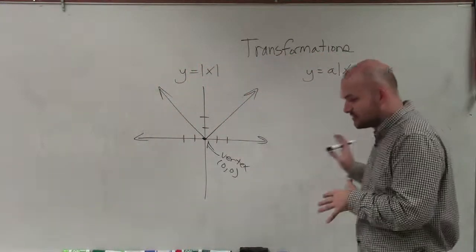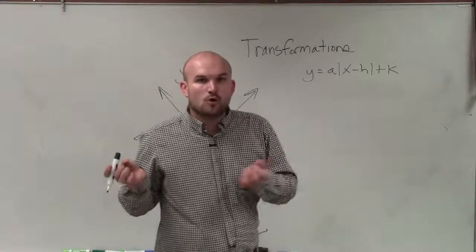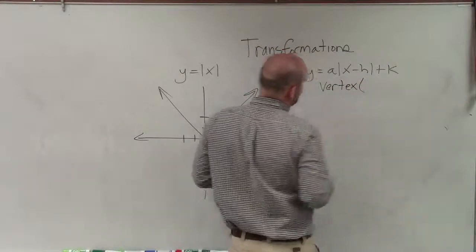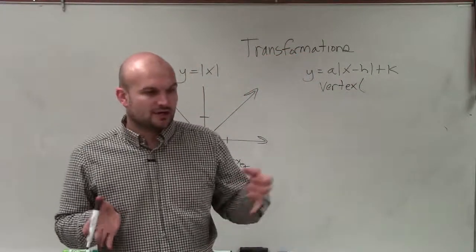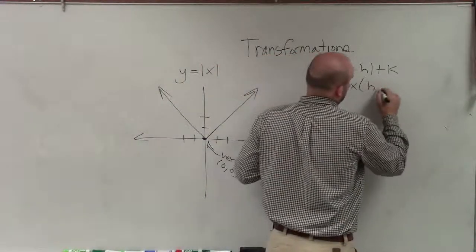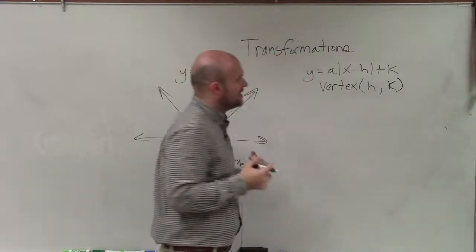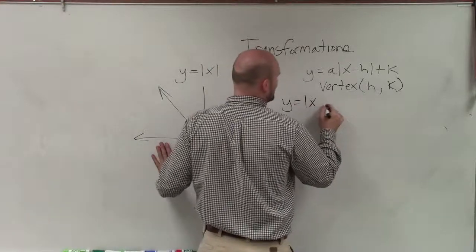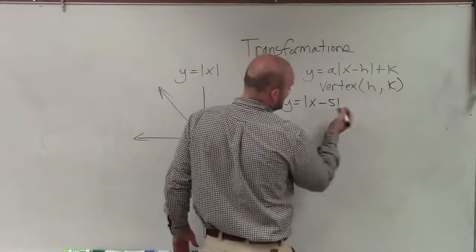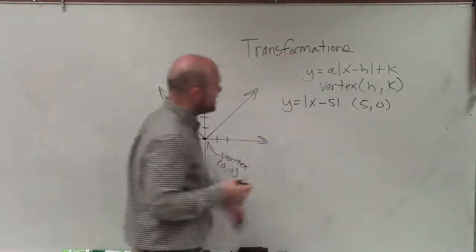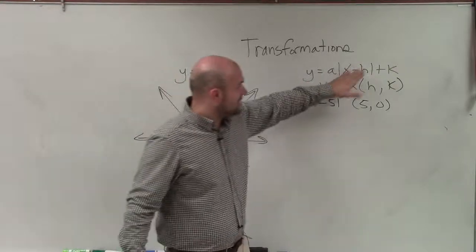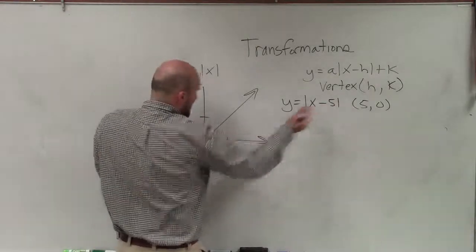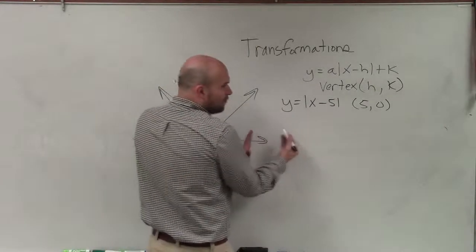What's important about the transformations is really identifying what exactly they do to the graph. By messing around during our investigation, when we use a table of values, what we're able to determine is that the new vertex goes by our labels of h comma k. For instance, if I have an equation y equals absolute value of x minus 5, then my new vertex is going to be (5, 0). The graph says x opposite of h, and then the vertex is h, so therefore it's 5. That means instead of my vertex being at (0, 0), now it's at (5, 0) — the whole graph is being shifted 5 units to the right.